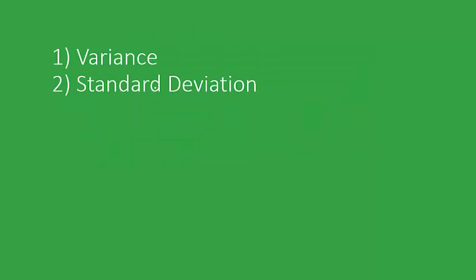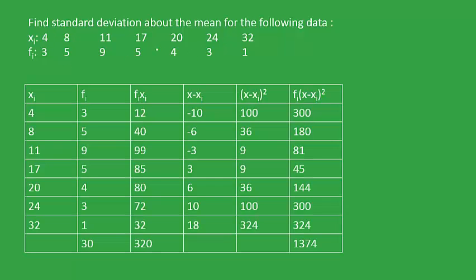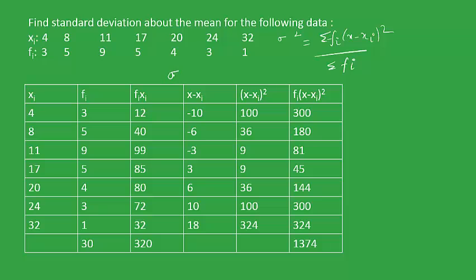After discussing mean deviation, we move on to the next measure of dispersion — variance and standard deviation. These first four columns are similar to the ones used when calculating mean deviation; only the next part changes. The formula for variance is: variance equals sigma fi into (xi minus x-bar) squared, upon sigma fi. The positive square root of this, sigma, is the standard deviation.